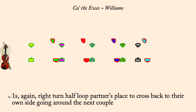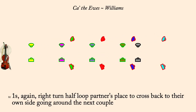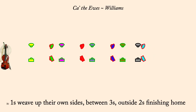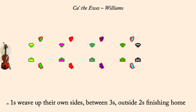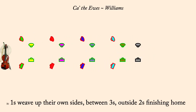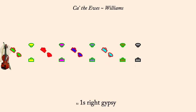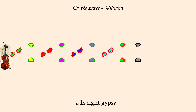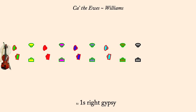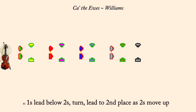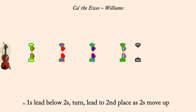One's weave up, inside threes, outside twos, to home. One's right gypsy. Back to second place. Twos move up.